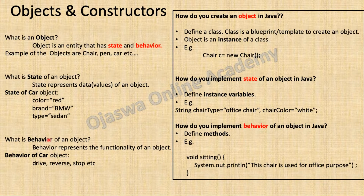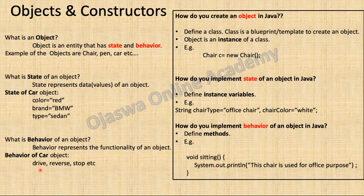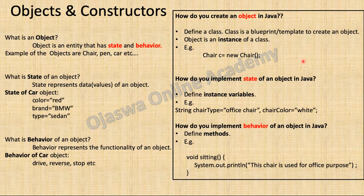What do you mean by behavior of an object? Behavior represents the functionality of an object. In case of a car object, the behavior of the car could be drive, reverse, stop, etc. Now, how do you implement this in Java? To define an object, first you need to define a class.